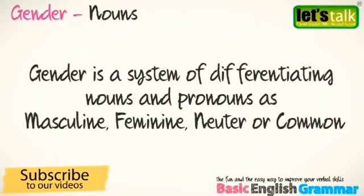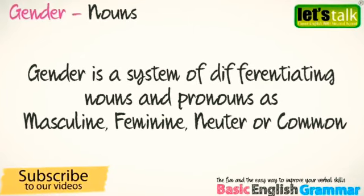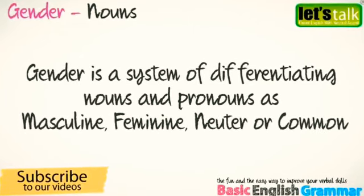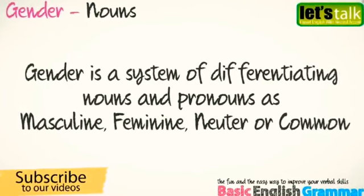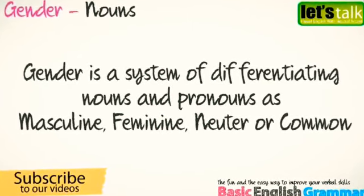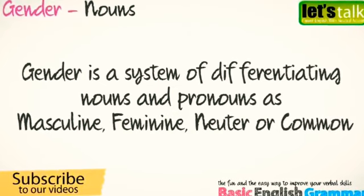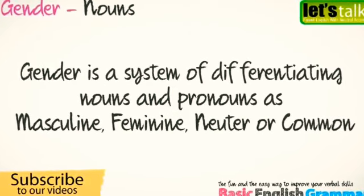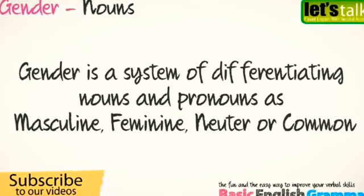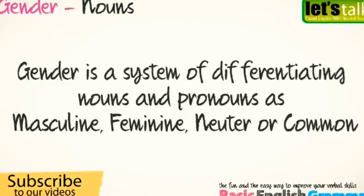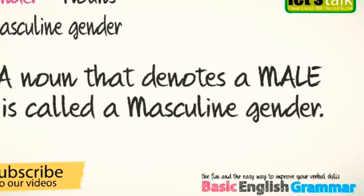Let's see the definition of gender. A gender is a system of differentiating nouns, pronounced as masculine, feminine, neuter, or common gender.